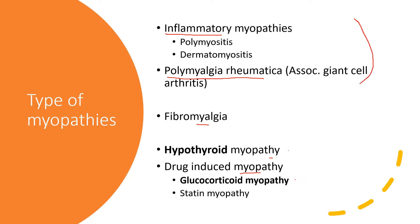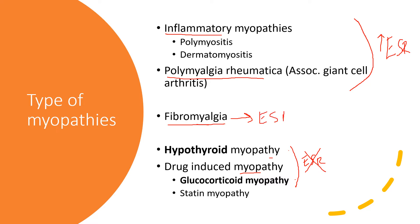Inflammatory myopathies and polymyalgia rheumatica are associated with increased ESR, which is really important to differentiate all of these. Hyperthyroid myopathy and drug-induced myopathy are not associated with elevated ESR. And fibromyalgia is not associated with any type of marker — neither ESR nor creatine kinase.